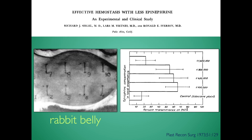Here we see a rabbit belly used to measure transmittance of light through a blanched area of skin. You can see that 1 in 100,000 results in the same cutaneous effect as 1 in 800,000, so there's no real advantage to diluting your epinephrine within this range if your goal is to protect the fingers.